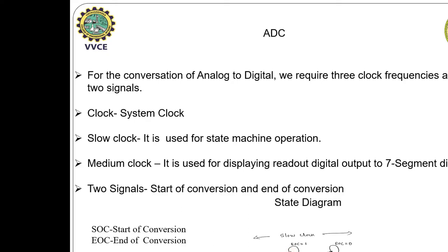When end of conversion equals 0, it will move into state 2. In state 2, once again it will check for end of conversion. If it is 0, it will remain in the same state. When it is 1, which indicates that analog input is converted into digital output, it moves forward. In state 3, we are going to read the digital output from the ADC.